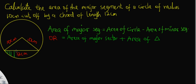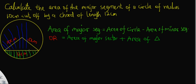On my sketchpad, the region I'm shading right now is the minor segment — this is the region formed by the chord introduced in the circle. We also have the major segment, which is the region shaded blue. The region shaded green is the minor segment, while the region shaded blue is the major segment.